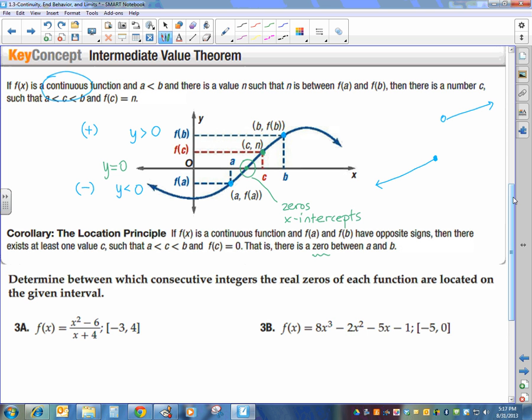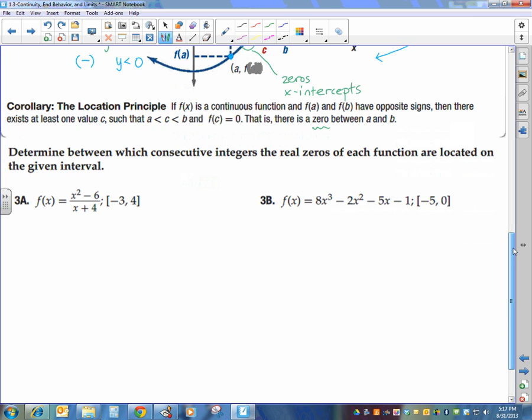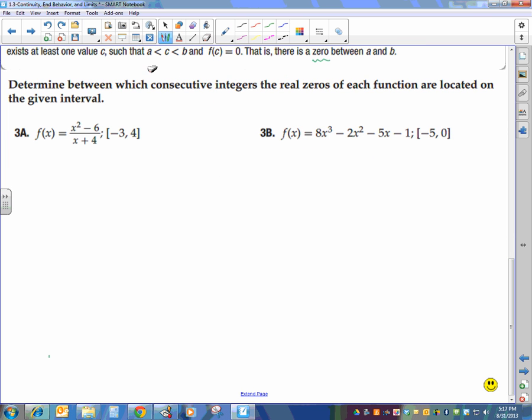The examples - what we're going to have to do with this concept is determine between which consecutive integers the real zeros of each function are located on the given interval. Our interval is given to us, right here. So we're going to put our values in: x, f(x). We're going from negative 3, negative 2, negative 1, 0, 1, 2, 3, and 4.